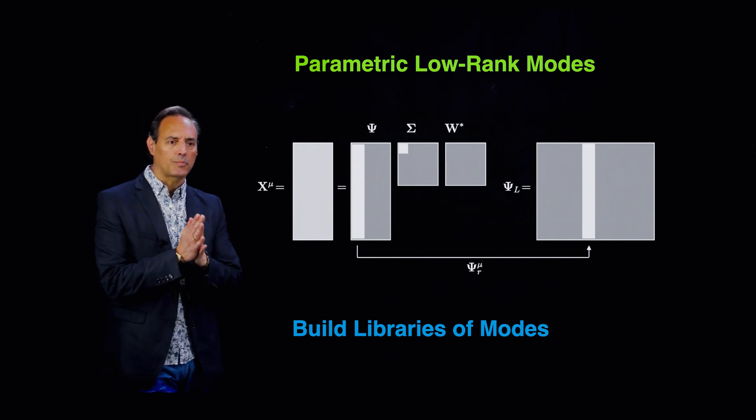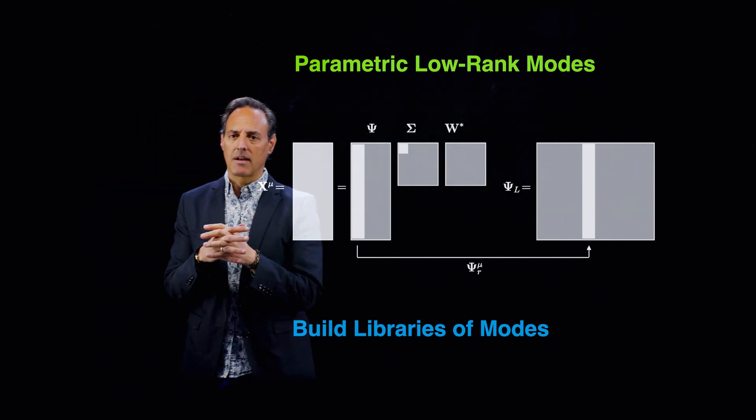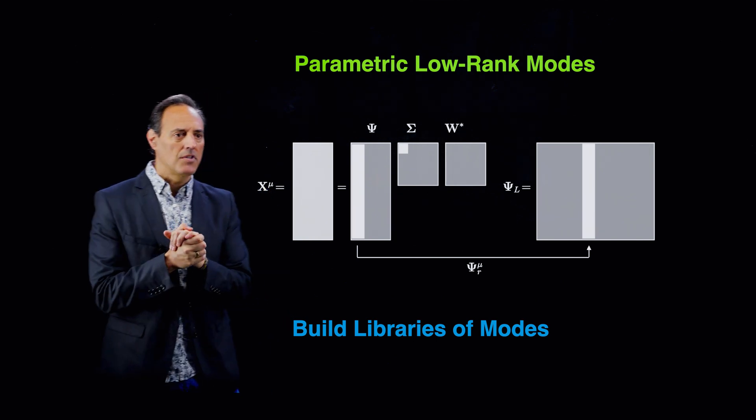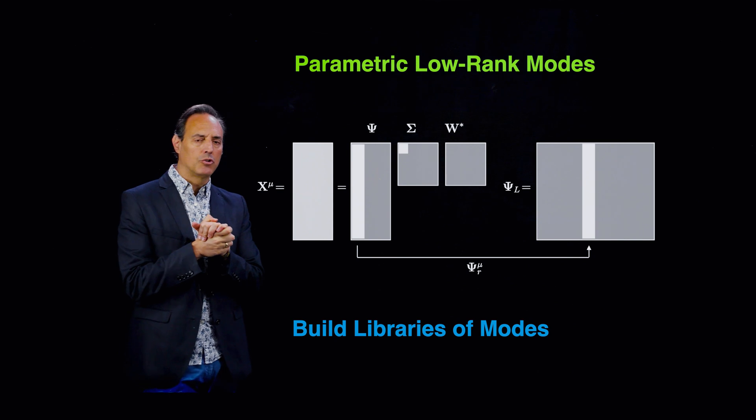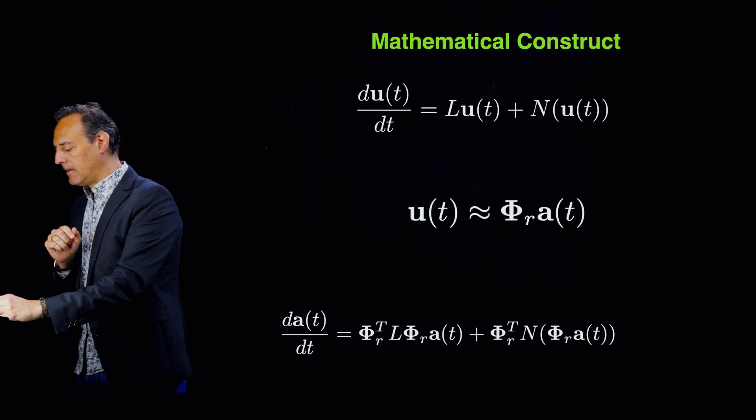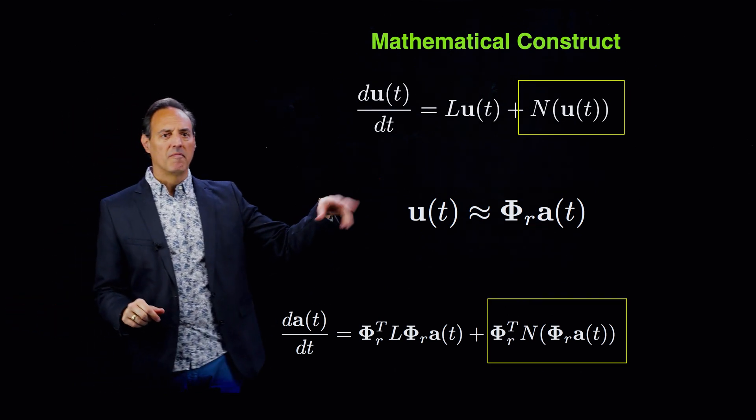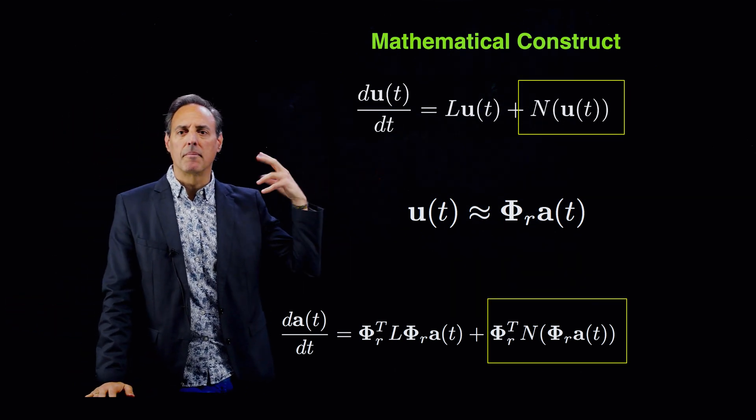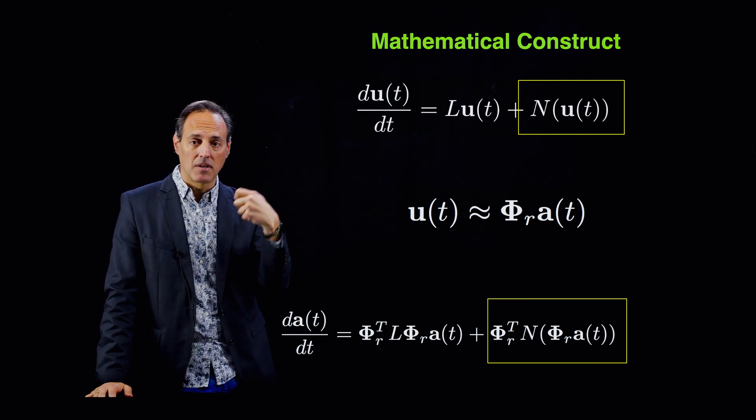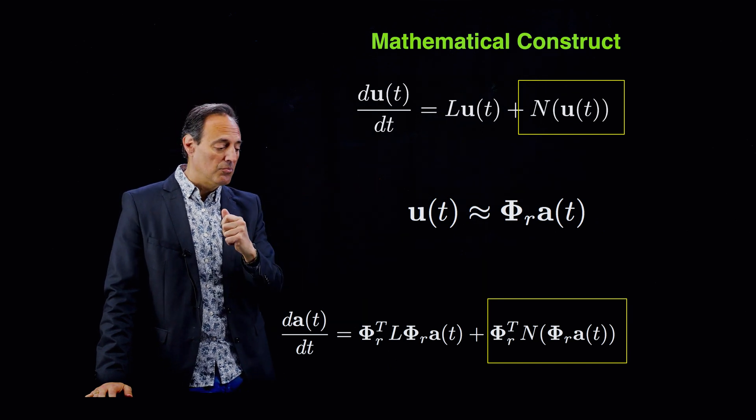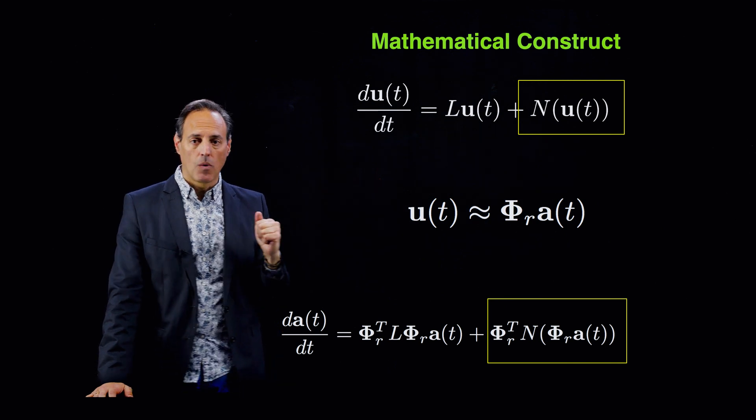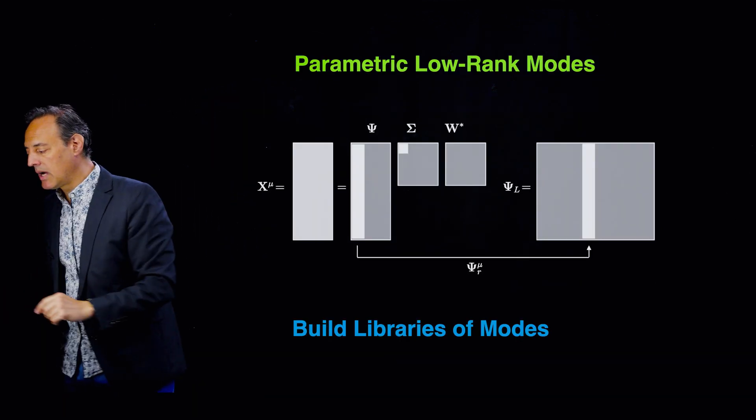What I want to start talking about is this concept that really comes out of machine learning, which is let's build libraries of modes. So this is sort of this construct that we might have. Suppose that PDE depends on some parameter mu. Suppose that mu is either a bifurcation parameter. It doesn't even have to bifurcate. It's just a parametrization of this problem where as mu changes, your subspace changes. So what we want to do is capitalize on that and say that's fine.